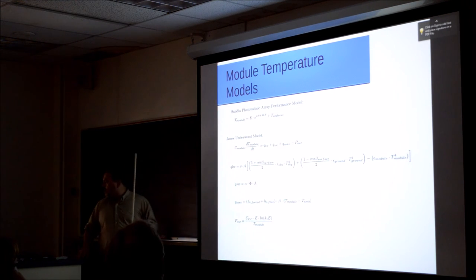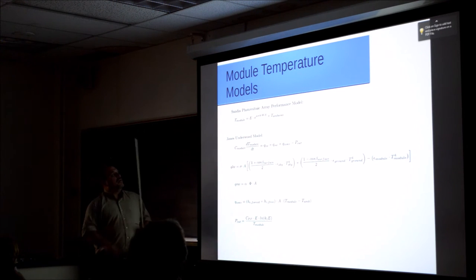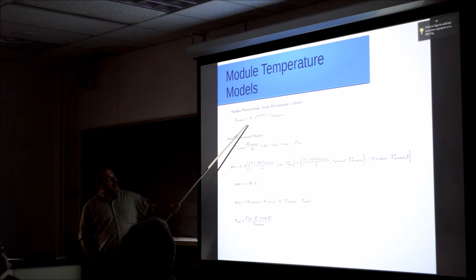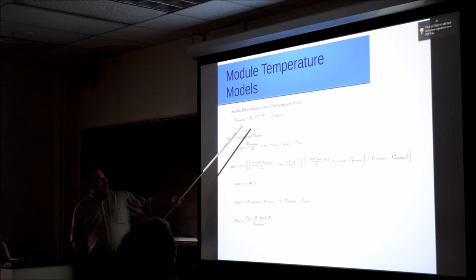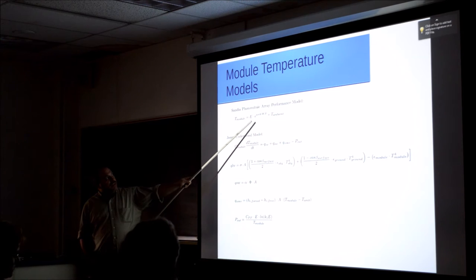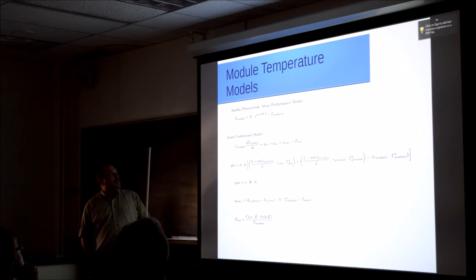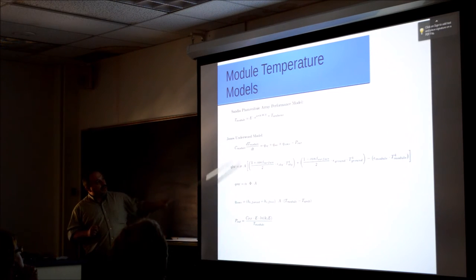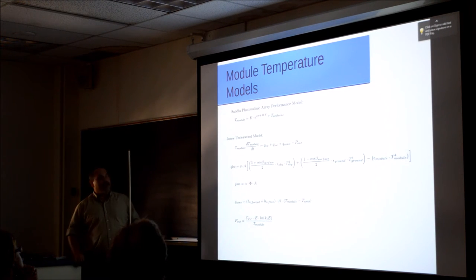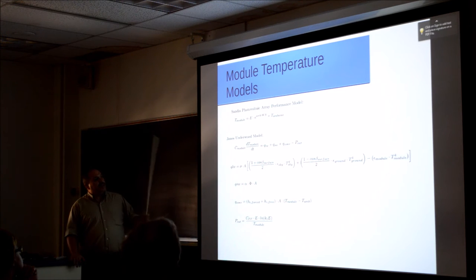Most of my time I focused on a couple of models for calculating the temperature of modules. This is a commonly used one up here — it's a fairly simple steady state model. We have irradiance and wind speed and the ambient temperature. A and B are empirical constants that have to do with the material configuration of the module. I was trying to improve on this. I've been working with a MATLAB library put out by Sandia called PVLib, and they have a function for doing this, but not for something a bit more complicated.